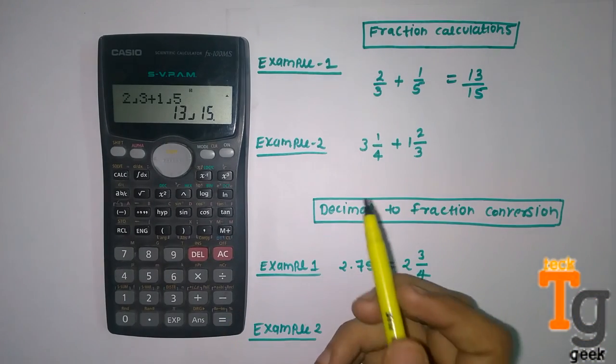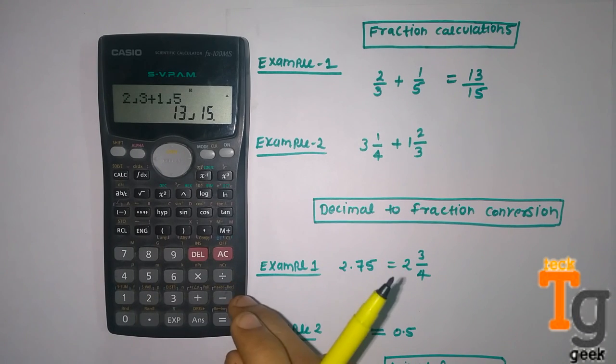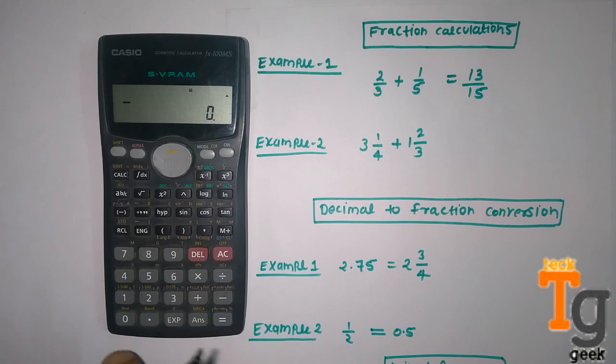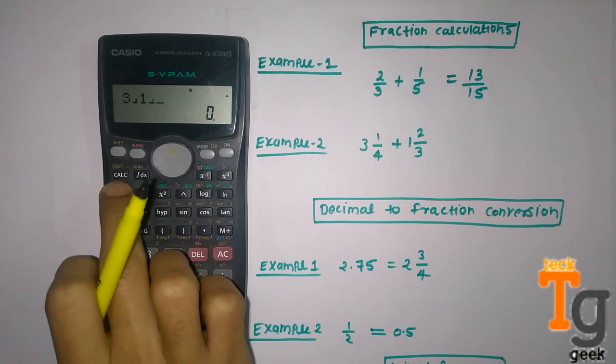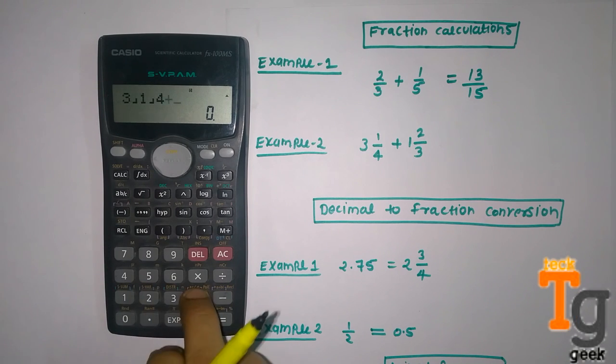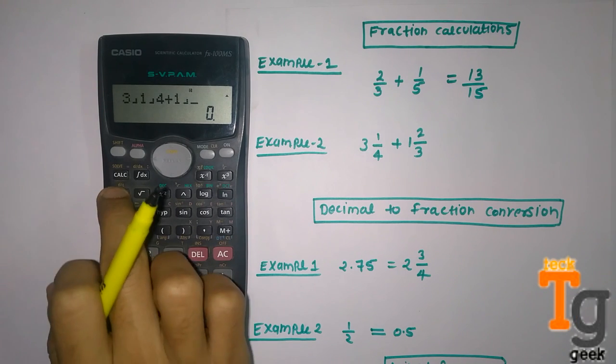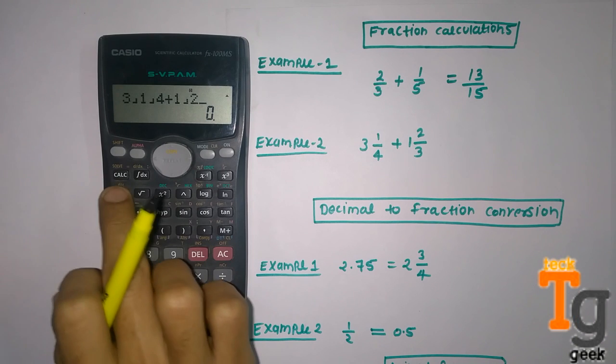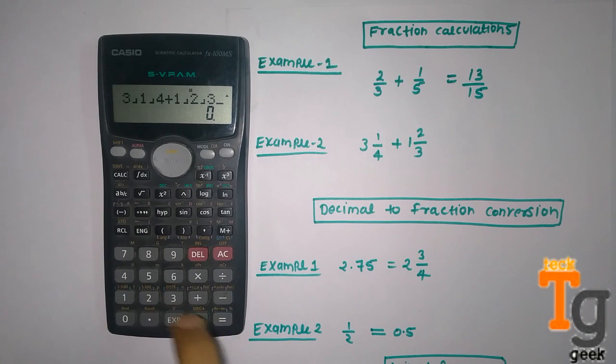And now example 2. How we solve it? It is always simple. 3, press this a b/c, 1, press this, 4, plus, 1, press this, 2, press this, 3, and it will give you 4 and 11/12.